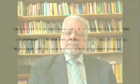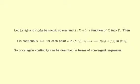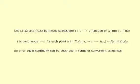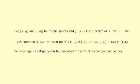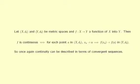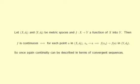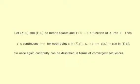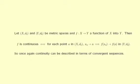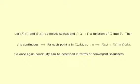Now ℝ is just an example of a metric space, and continuity in metric spaces can also be described in terms of sequences. Let (X, d₁) and (Y, d₂) be metric spaces and f a function mapping X into Y. Then f is continuous if and only if for each point a in X and each sequence xₙ converging to a in (X, d₁), f(xₙ) converges to f(a) in (Y, d₂). So once again continuity can be described in terms of convergent sequences.